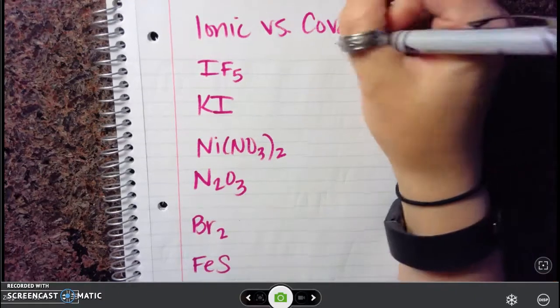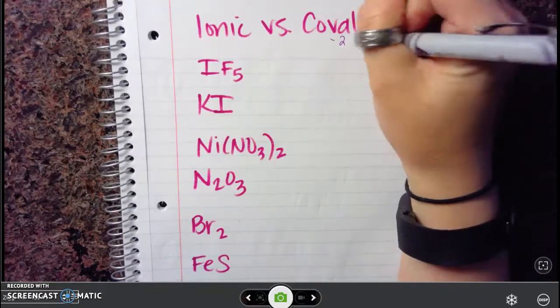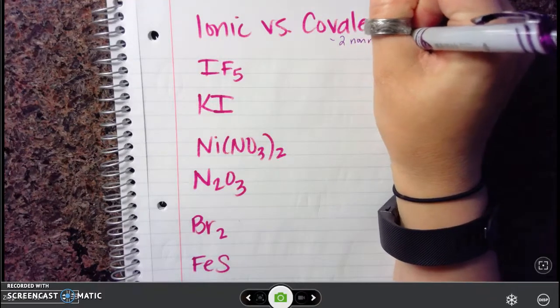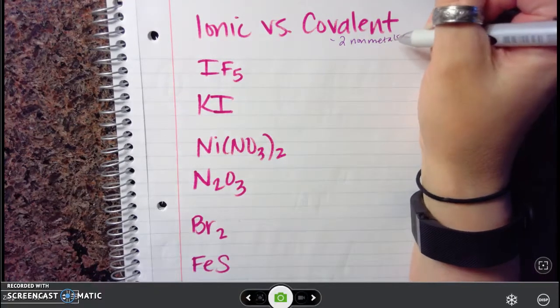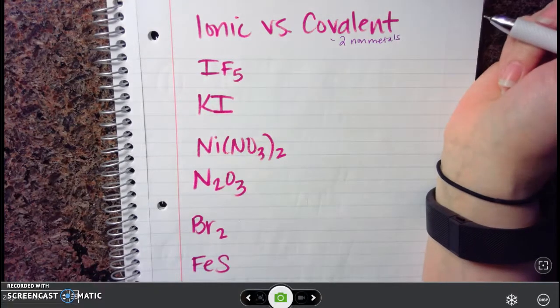If you have a covalent bond, this is made up of two or more non-metals. So there's no metals actually in your covalent compounds. These just share electrons in order to make a full octet.